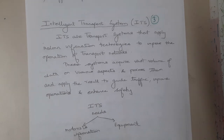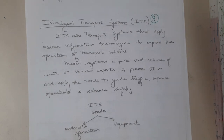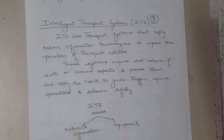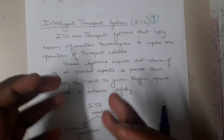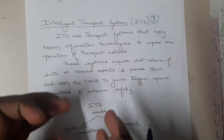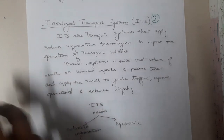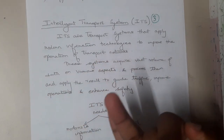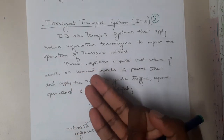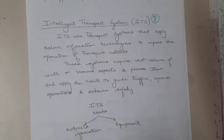Hello guys, we are back with our next lecture. In this lecture, let us go through Intelligent Transport Systems. From the name itself you can identify — it is a transport system which has intelligence, so it can observe something and analyze something. Basically, you are using some technologies or tools to intellectually predict transportation and analyze things to decide things in transportation.